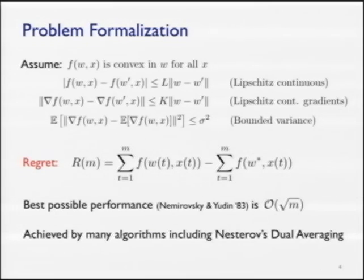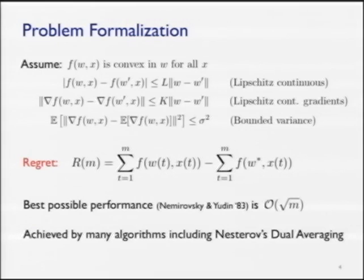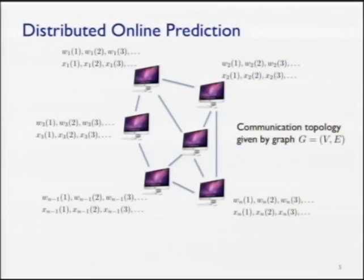The best one could hope to achieve in this scenario is regret growing like the square root of M, under the assumptions I've made. If you make stronger assumptions you can get better bounds, but for this class of functions the square root of M rate is optimal. It's achieved by many first-order gradient-based algorithms, in particular by Nesterov's dual averaging algorithm, which we'll build on later.